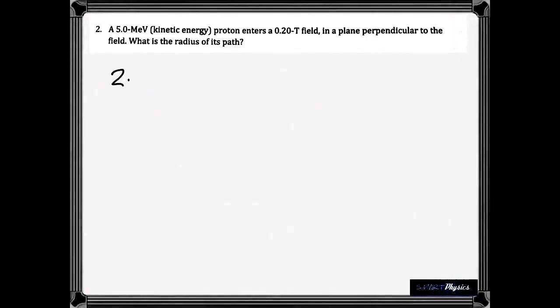Second question. It's a 5 mega electron volt, which says it's kinetic energy, proton entering a 0.20 tesla field. And it's entering perpendicular to the field. What's the radius of the path? Now to find the radius of the path, we know that the centripetal force mv squared by r becomes equal to qvb from which you get the radius. But we need to find the velocity of the particle. What's given is its kinetic energy. So that's the plan. From the kinetic energy we need to get the velocity first.